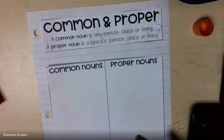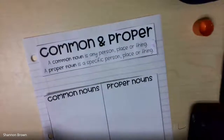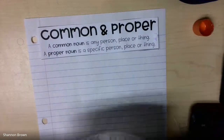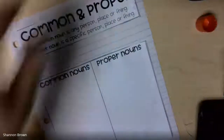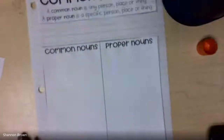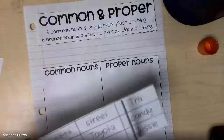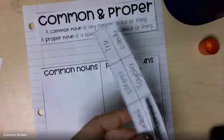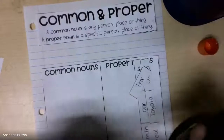Now I'm going to go ahead and glue the common and proper noun main paper to the middle of my piece of notebook paper. This is what your actual notebook should look like before you start doing anything else. Now I'm going to take the words that I cut off of the main paper and cut them apart one word at a time.